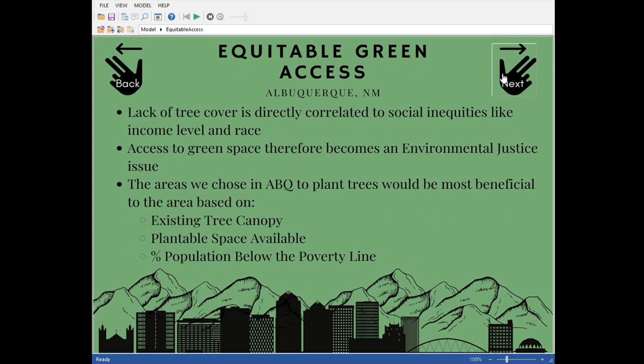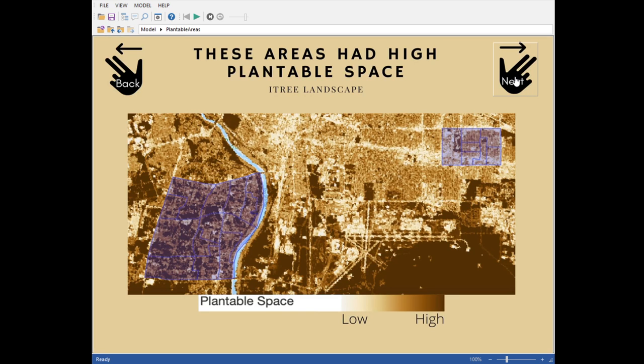This is the start of the informational slides, giving you some background knowledge and basic information that can help you decide where to plant trees, the importance of trees, why we chose the areas that we did, and just different information to help you make decisions later on. This shows the two locations we chose, first being the South Valley shown on the left, and the next being the International District on the right.